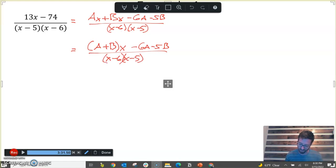Now notice what we've got here. I'm going to copy down the left side of our equation: 13x minus 74 over x minus 5 times x minus 6. As we look at this, our denominators are the same, so I'm not worried about the denominators. This denominator matches this one. So let's ignore those for now. Maybe you even want to think of it as multiplying both sides by the denominator. Just get rid of it.